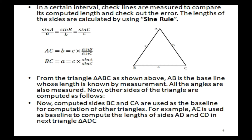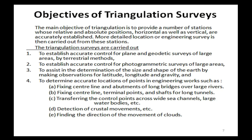From triangle ABC, AB is the baseline whose length is known by measurement; all the angles are also measured. The other sides of the triangles are computed accordingly. The computed sides BC and CA are then used as the baseline for computation of all other triangles. For example, AC is used as a baseline to compute the lengths of sides AD and CD in the next triangle ADC.